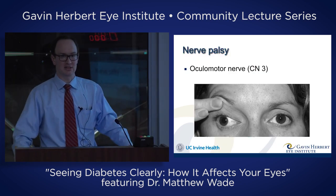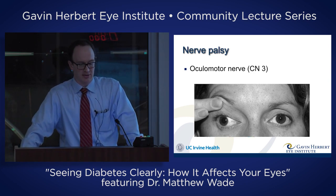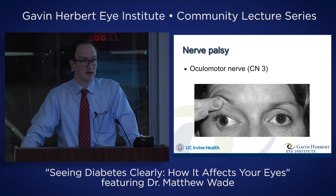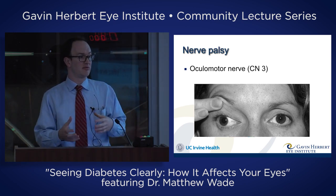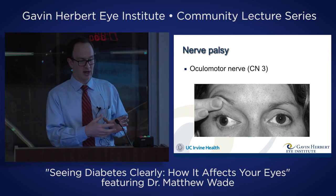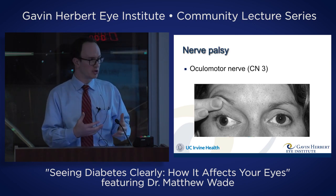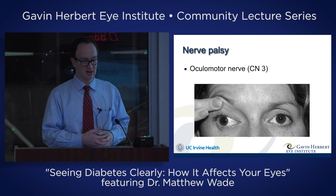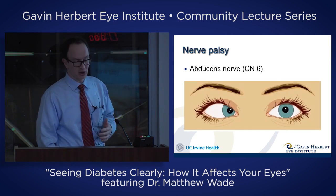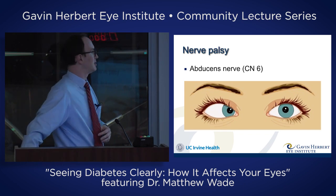Diabetes can also cause a palsy. You'll see that one eye is looking forward and the other is looking to the side, because the vessels that serve one of the muscles around the eye have had a problem, so that muscle isn't working. Typically if it's due to diabetes, it will regrow and work again after a few months. If it's due to a stroke or other causes, it may not. This is another example of small vessel damage from diabetes.